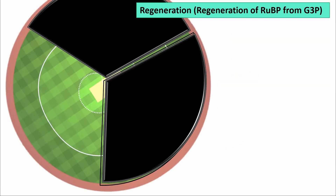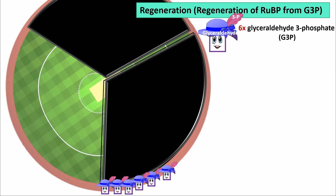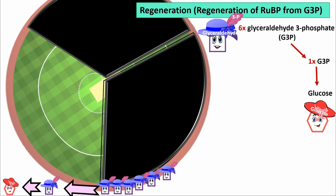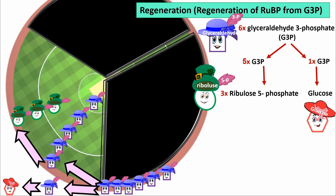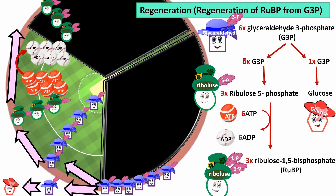The third step of the Calvin Cycle is regeneration, or regeneration of RuBP from G3P. We have six glyceraldehyde 3-phosphate, or G3P, from the second step. One G3P molecule exits the cycle and goes toward making glucose. Five G3P molecules are cycled and convert to three ribulose 5-phosphate, which uses three ATP to generate three ribulose 1,5-bisphosphate, or RuBP.